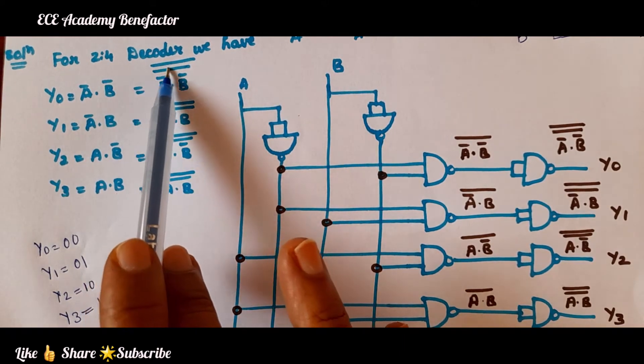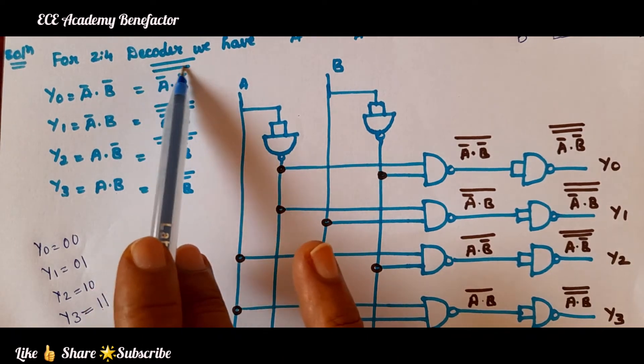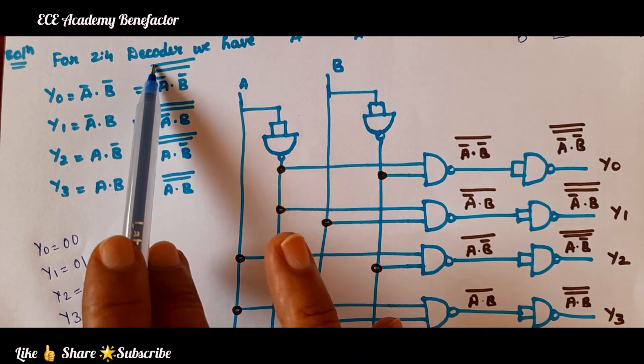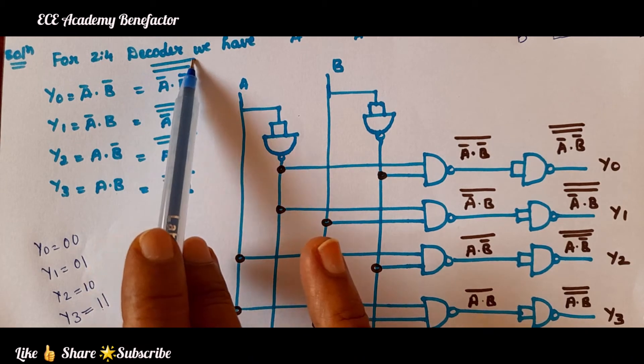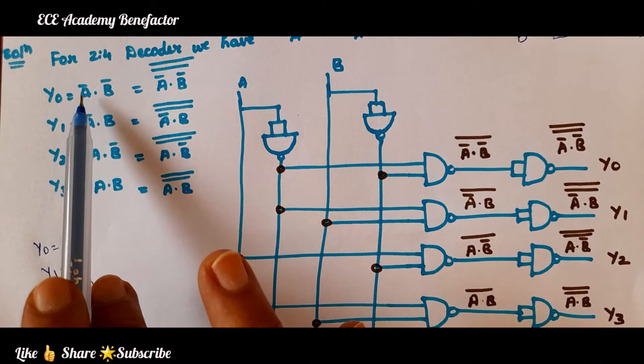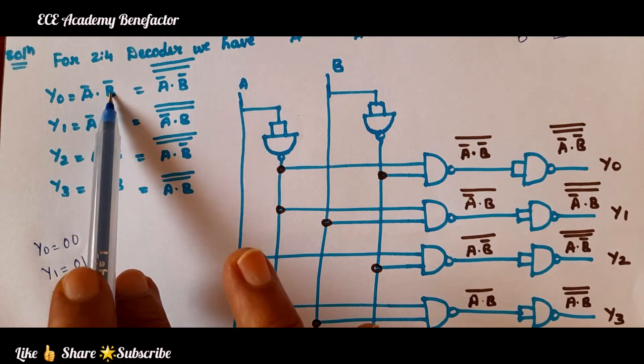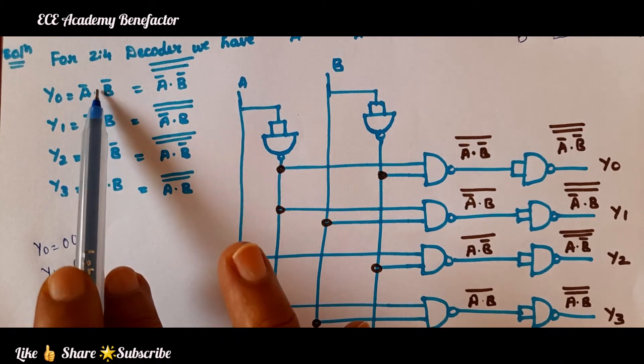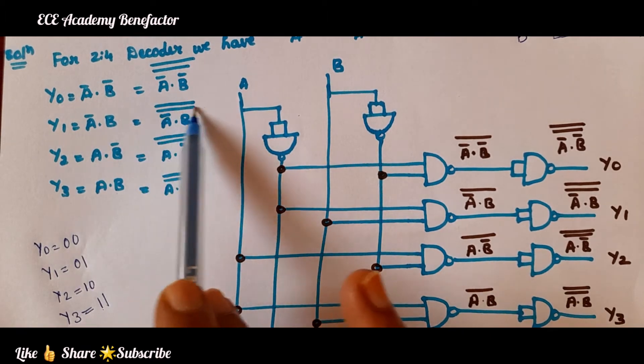We cannot simply put a bar or a complement. To nullify this complement, we are putting one more bar. By putting 2 bars, the equation is same as A̅·B̅. In all the terms we are putting double bar.